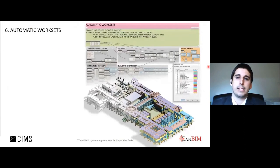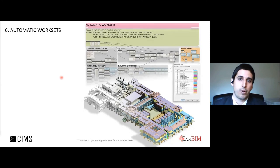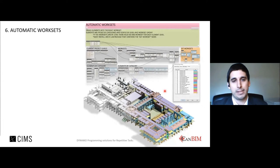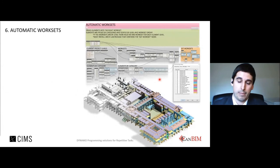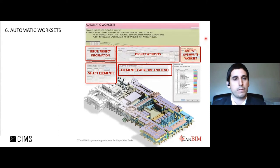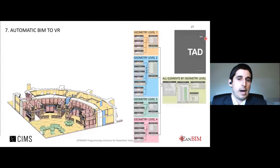Example seven: automatic workset placement. This process sets every element in the model into the right workset automatically, saving a lot of time and keeping all elements in the right place. For large projects with many collaborators, this is especially useful — all team members know exactly where elements are, can open only the workset they need, and can be sure everything is in the right place. The script runs daily in seconds.